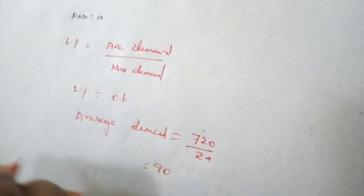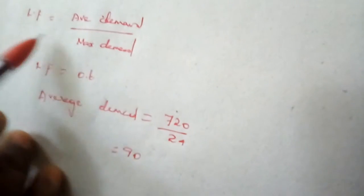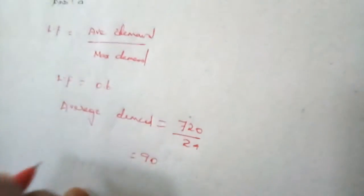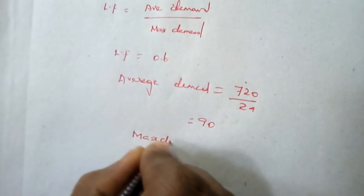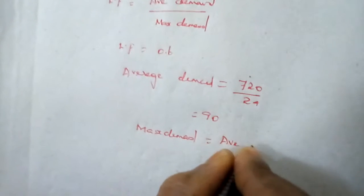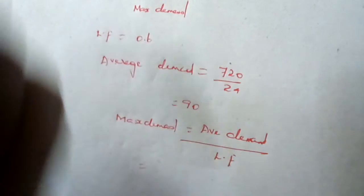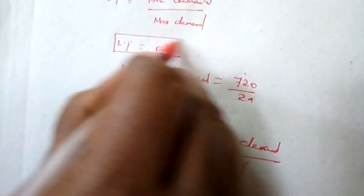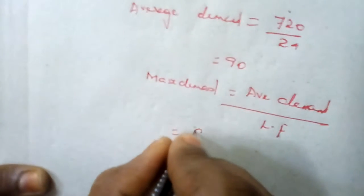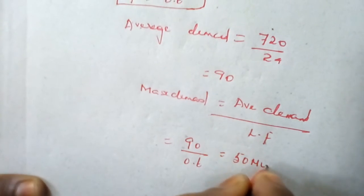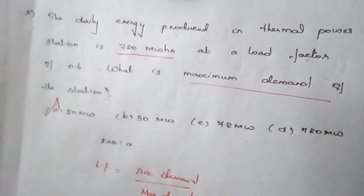Now, rearranging the formula — maximum demand equals average demand divided by load factor — we substitute: 30 divided by 0.6, which equals 50 megawatt. So for question number three, option A is the correct answer.